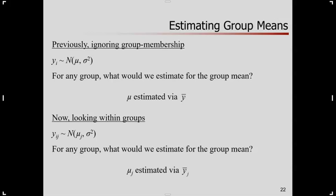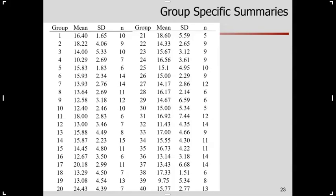Anyone see the difference in notation? This ignores group membership. There's no subscript for j. This conditions on group membership. Only look at scores from group j. Sometimes I get obsessed about notation, but it communicates something to us. So if I want to do a group-specific analysis, my estimated group mean is just going to be the sample mean for each group.